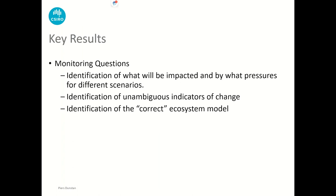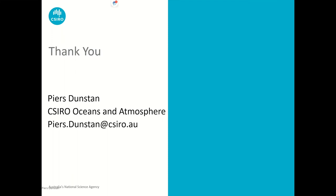So the key results that come out of this are that it starts to enable us to build monitoring questions to answer particular things about the objectives we're setting. We can start to identify what will be impacted and by what pressures under different scenarios. We can start to identify unambiguous indicators of change, and we can start to identify the correct ecosystem model if that's one of the things we're testing. Thank you very much.